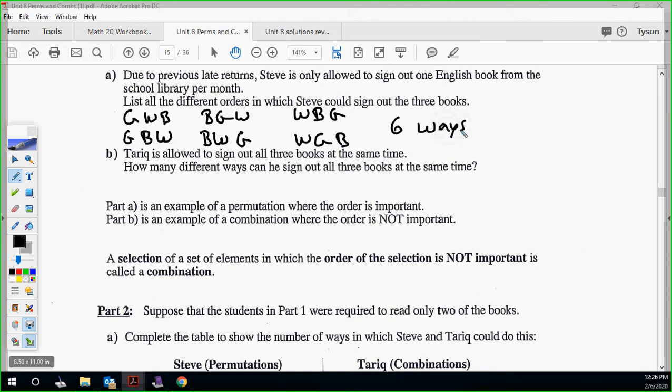Tariq is allowed to sign out all three books at the same time. How many different ways can he sign out all three books? Well, that's kind of silly. It doesn't matter the order. He's taking all three of them. So one way. That's kind of the illustration of permutation versus combination. So Steve, the order mattered because he had a restriction. Tariq can just take them all. So it doesn't matter how he gets all three.